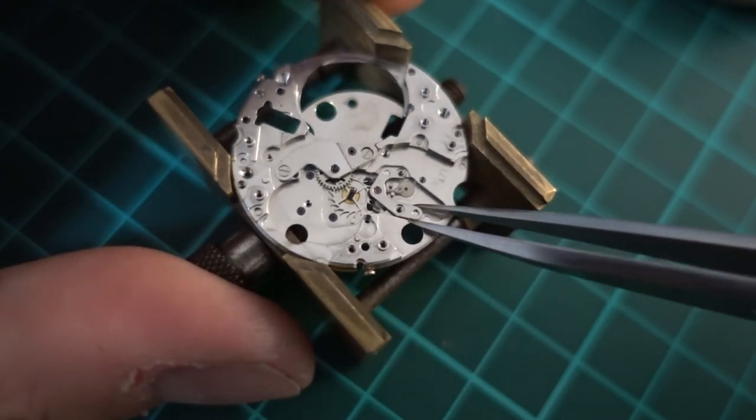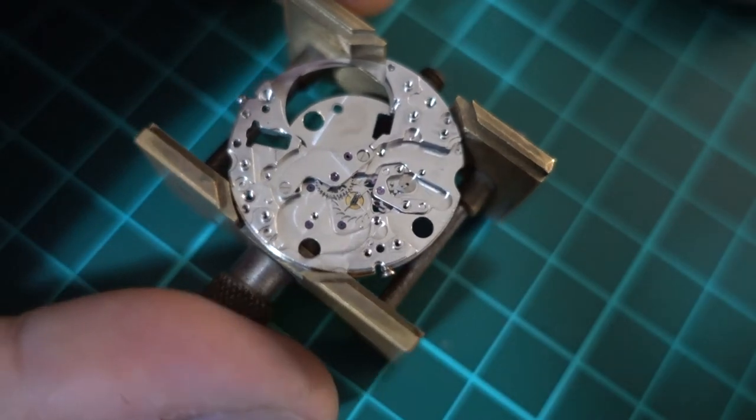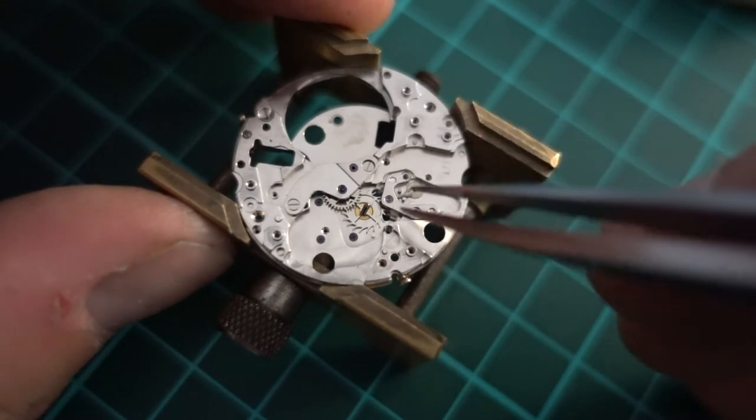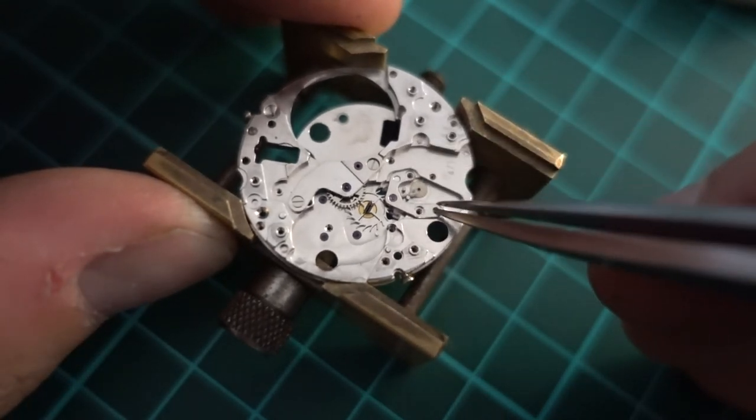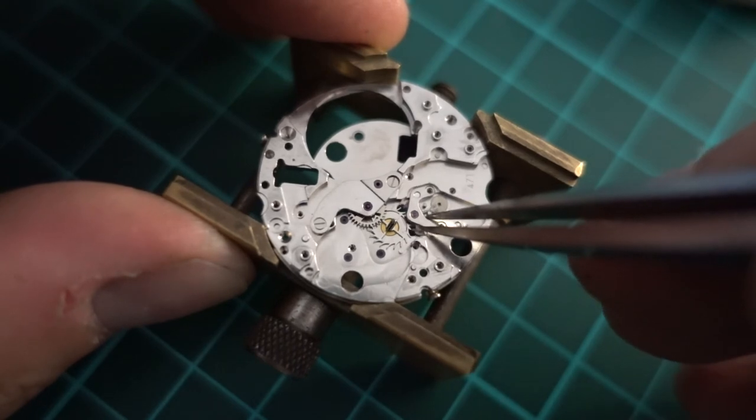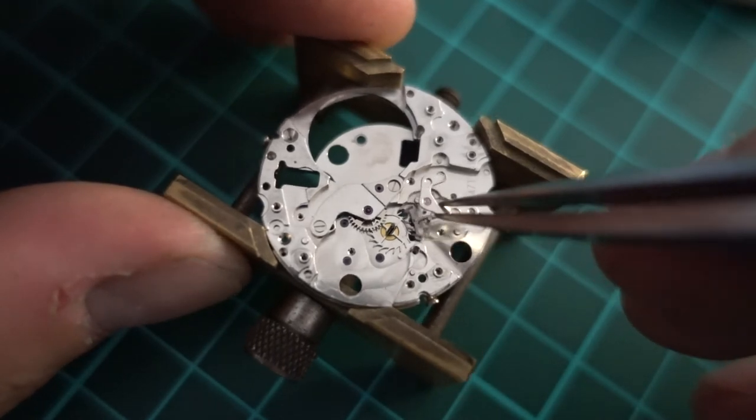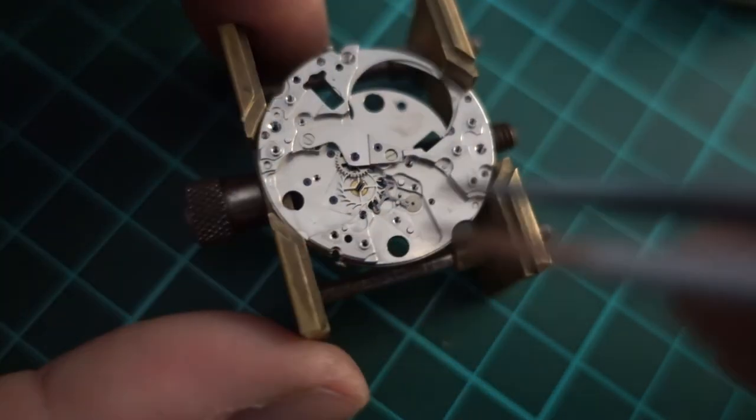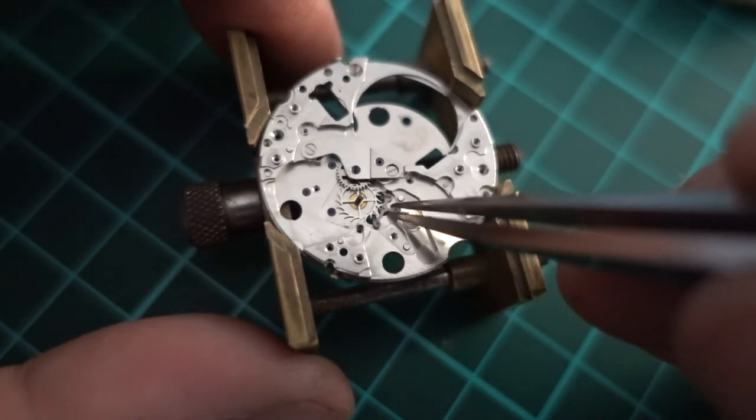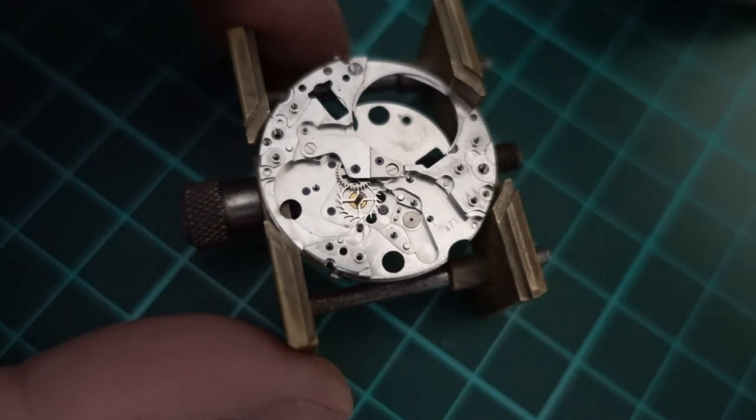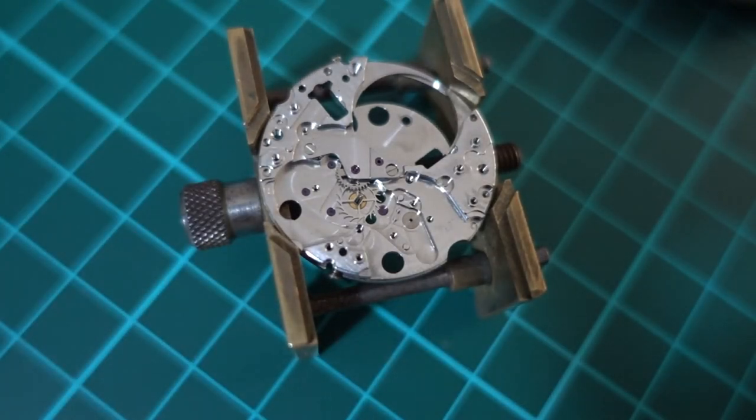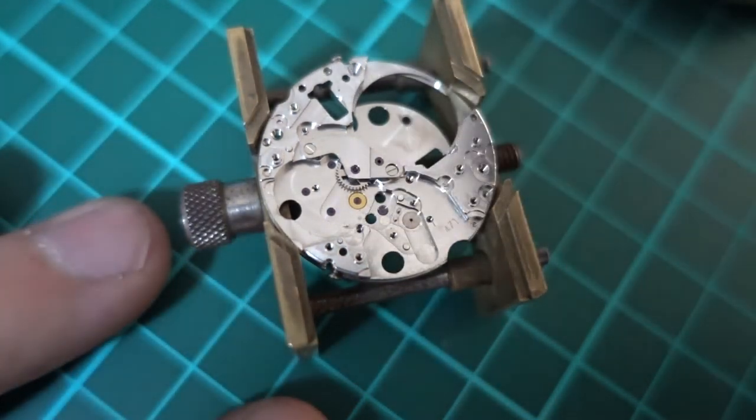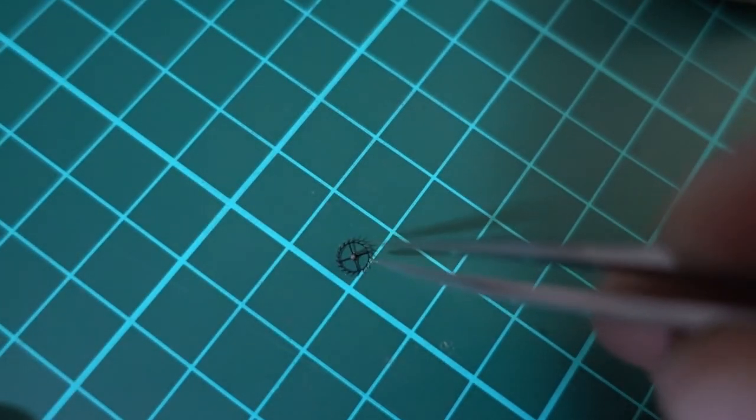I'm just removing the pallet cock there. It's a little bit fiddly to remove from memory. We want to be careful because we don't want to break the pivot that is on top of the pallet fork. They're incredibly small. You can see that the escape wheel has a lot of teeth on it, so that is the part that regulates how often the watch ticks. For 10 ticks per second you need a lot of teeth. And there we go.